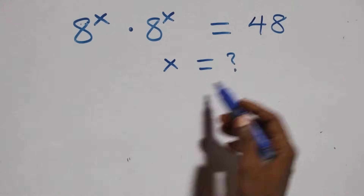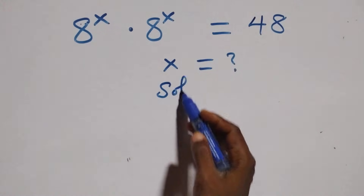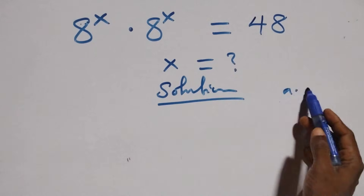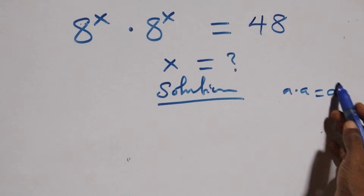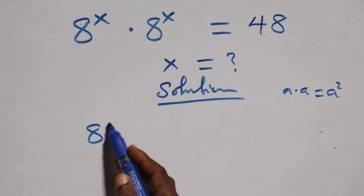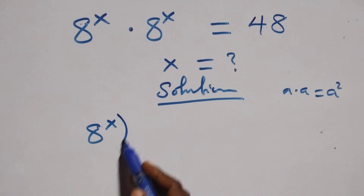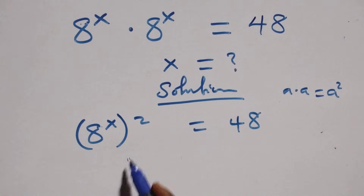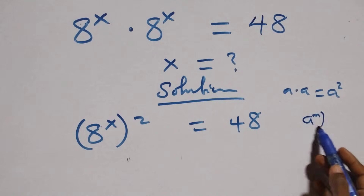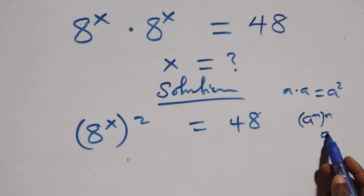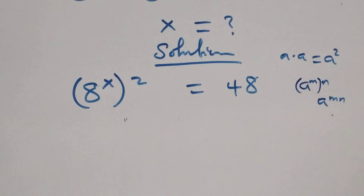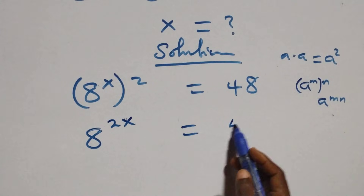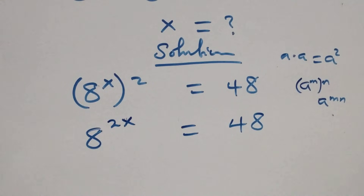Welcome. Let's solve this exponential equation. Here we have a times a, which can be written as a squared. Multiplying, we have a raised to power x squared equals 48 on this side. We also have a raised to power x times a raised to power x, which is the same as a raised to power 2x. So we have h raised to power 2x equals 48.